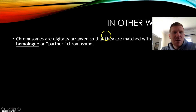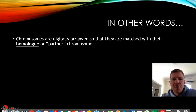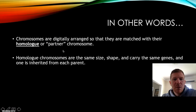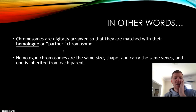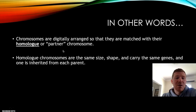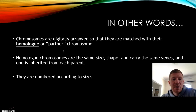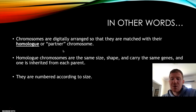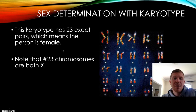Basically, chromosomes are digitally arranged so they are matched with their homolog or partner chromosome. Homologous chromosomes are the same size, shape, and carry the same genes. They also have a matching centromere. One is inherited from each parent, and they are numbered according to size — chromosome 1 is the biggest, chromosome 22 in humans is the smallest, and then we have the sex chromosomes after that.